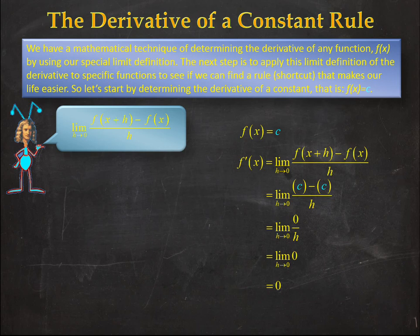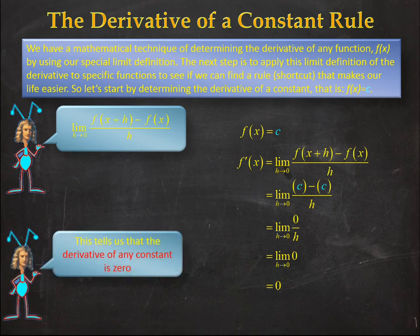So this tells us something neat. It says whenever our function is equal to any constant value, its derivative is equal to zero. That's cool. That's a nice little shortcut that we can apply.